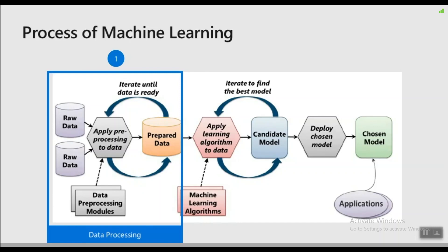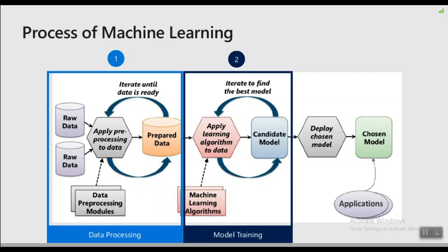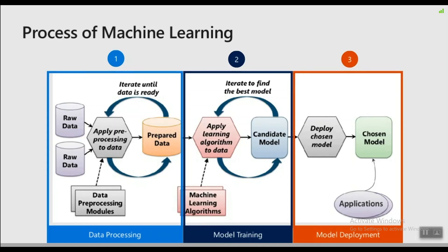The second step is model training. Once we have a dataset ready to be consumed, we find the right statistical algorithm to train our model. Data scientists typically go back and forth between different combinations of dataset and algorithm to find the most accurate model. A model is basically a piece of code capable of recognizing patterns in brand new data. And once we obtain the model, the most important step is to deploy it as part of an application so it can start making predictions on new input — this is the process of model deployment, also referred to as model inferencing.